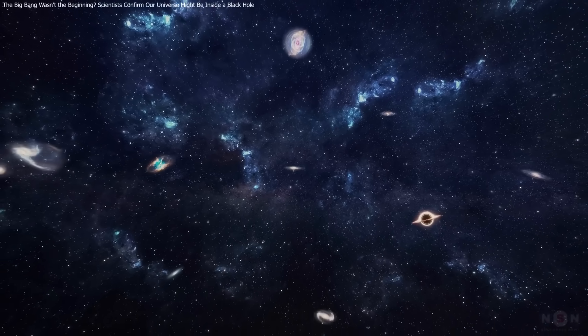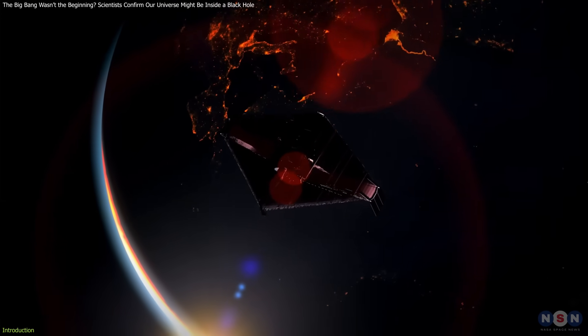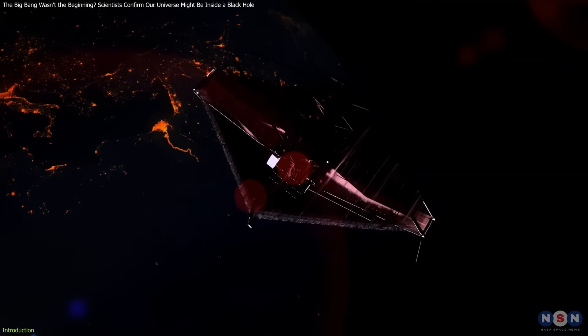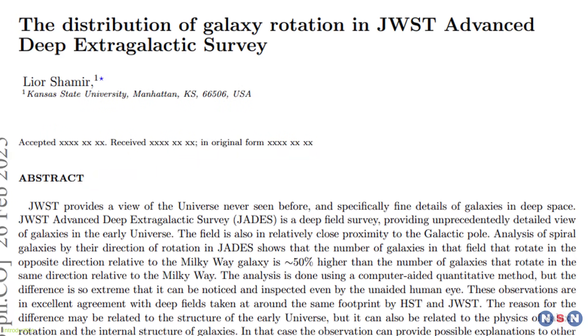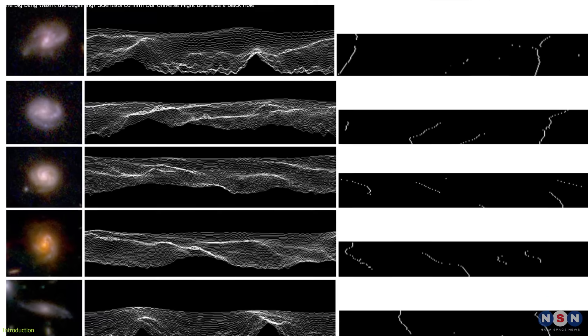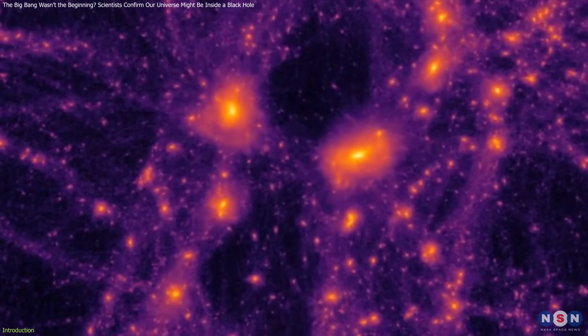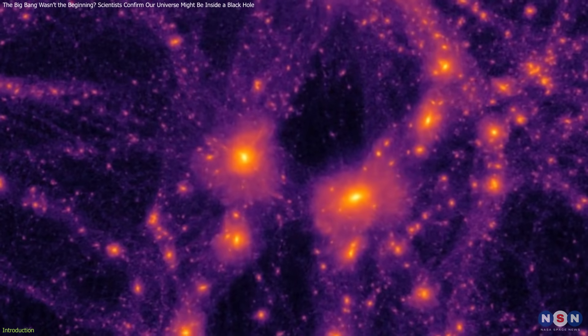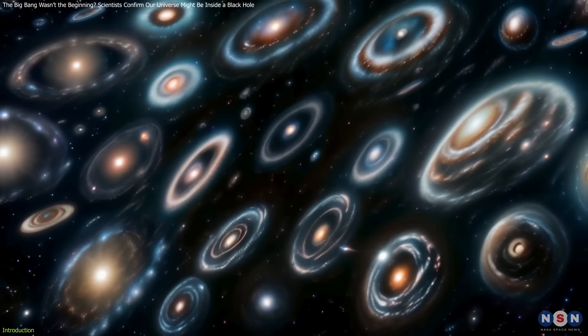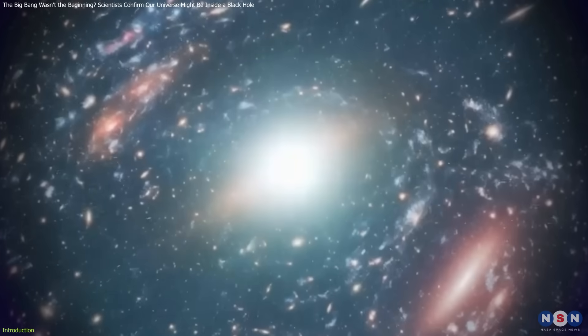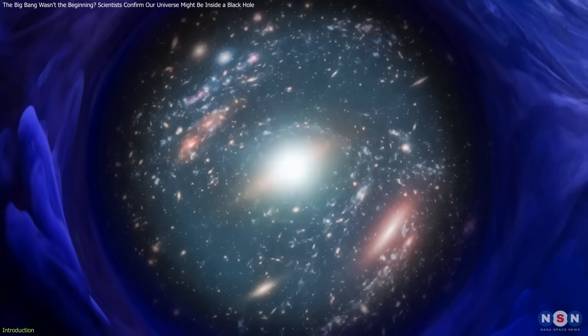What if our universe isn't what we think it is? Recent findings from the James Webb Space Telescope challenge our understanding. A study of galaxy rotations shows an unexpected pattern. Most galaxies spin in the same direction. This contradicts the assumption that the universe is isotropic, or uniform in all directions. Instead, it suggests a cosmic alignment and even raises the possibility that our universe could exist inside a black hole.